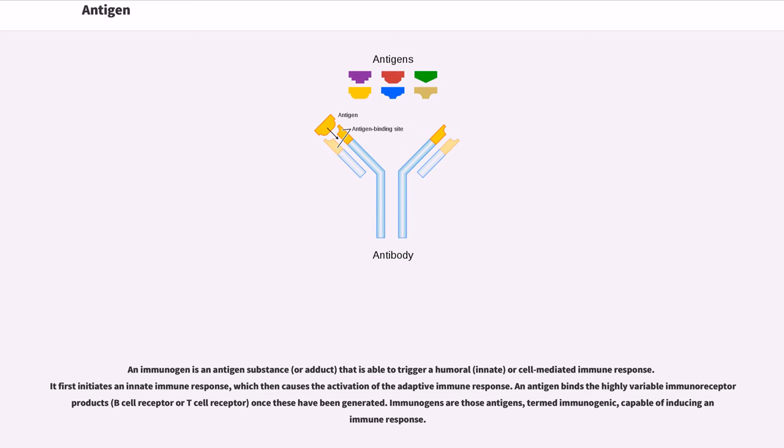An antigen binds the highly variable immunoreceptor products, B-cell receptor or T-cell receptor, once these have been generated. Immunogens are those antigens, termed immunogenic, capable of inducing an immune response.